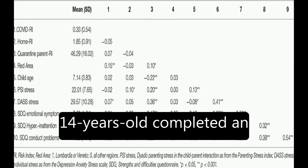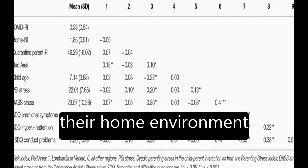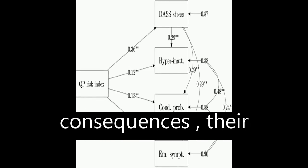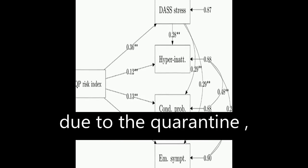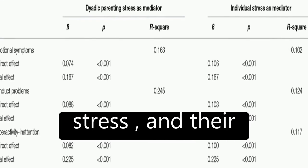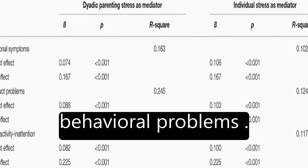Parents of children aged between 2 and 14 years old completed an online survey reporting their home environment conditions, any relation they had to the pandemic consequences, their difficulties experienced due to the quarantine, their perception of individual and parent-child dyadic stress, and their children's emotional and behavioral problems.